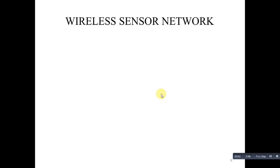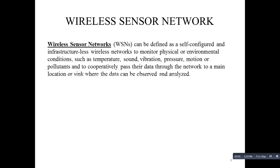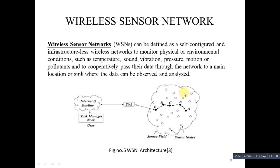The next concept is Wireless Sensor Network. A Wireless Sensor Network can be defined as a self-configured and infrastructure-less wireless network to monitor physical or environmental conditions such as temperature, sound, vibration, pressure, motion, or pollutants, and to cooperatively pass data through the network to a main location or sink where the data can be observed and analyzed. A Wireless Sensor Network consists of hundreds or thousands of sensor nodes, usually scattered in the field. Each sensor node has the capacity to collect data and route it to the sink or base station. The sink may communicate with the task manager and any user via internet or wireless network.